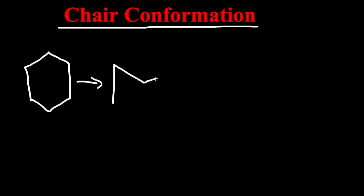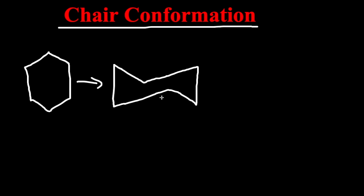The chair would be looking like this. For this chair, we would have two sides. These sides would be called equatorial and axial sides.